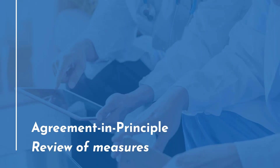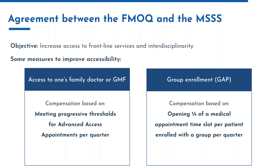The agreement in principle — a review of the measures. An agreement between the FMOQ and the Ministry of Health in Quebec was published last June, and it came into effect on June 1st. Its objective was to increase access to frontline services and interdisciplinarity. In this agreement, there were three measures presented, two of which generated a lot more attention within our clients. The first is the measure for access to one's family doctor or GMF, with compensation based on meeting a progressive threshold for advanced access appointments per quarter.